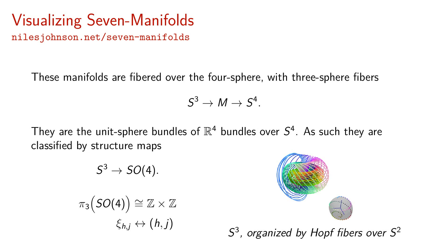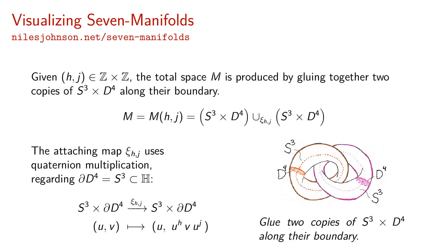These manifolds are fibered over the four-sphere with three-sphere fibers. They are the unit sphere bundles of R4 bundles over S4. As such, they are classified by structure maps in the third homotopy group of SO4, which is Z cross Z. Given two integers H and J, the total space M is produced by gluing together two copies of S3 cross D4 along their boundary.